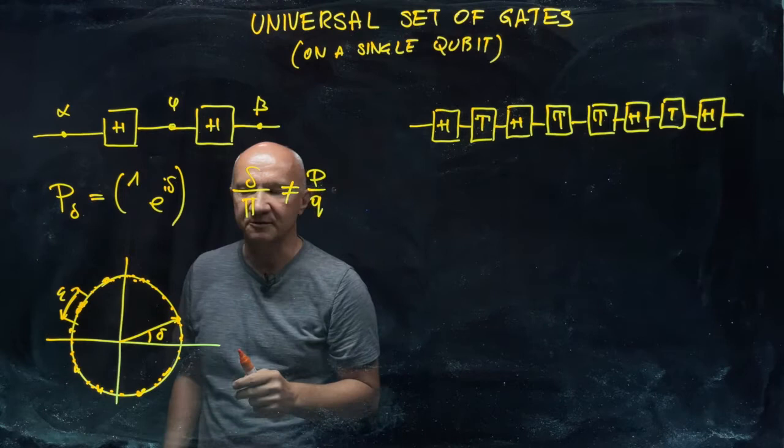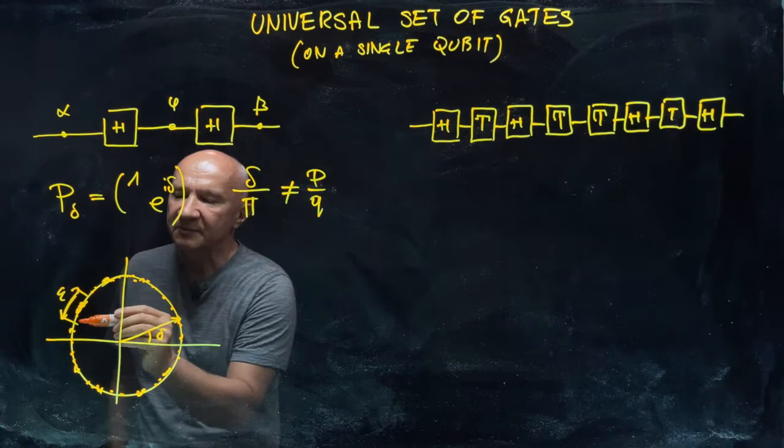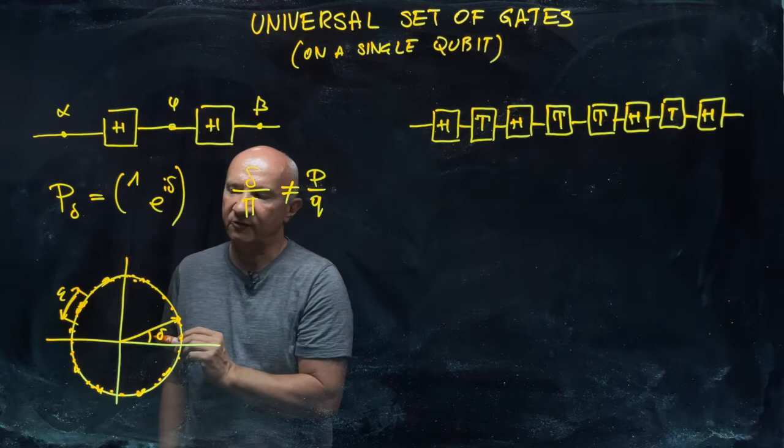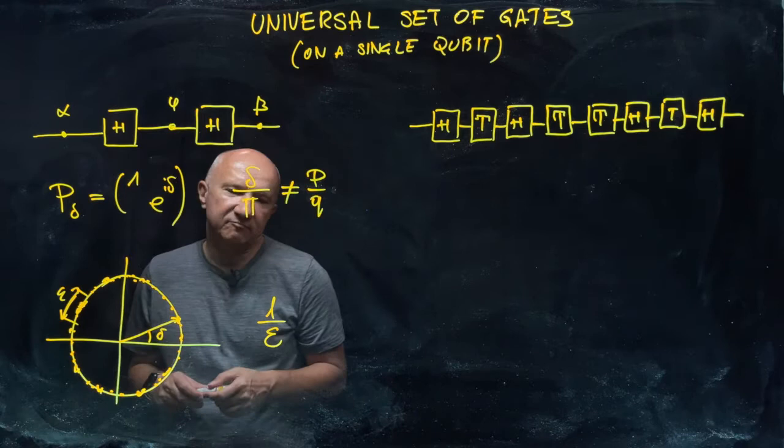And a very simple argument can actually show you that if you're required to end up somewhere in this interval epsilon away from the desired point, that number of iterations on the order of one over epsilon is sufficient to get you there. So that's pretty good. That's a reasonable solution to the problem.